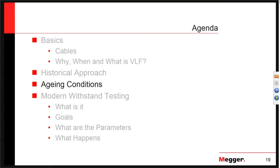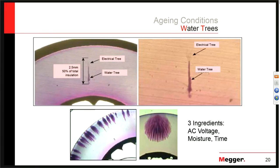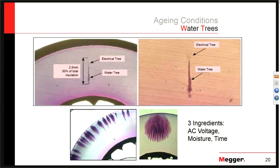What are the aging conditions we keep talking about? Primarily, we're talking about water trees. Almost every cable will develop them — some are more susceptible than others. We classify them into two groups: small distributed water trees, which are an issue but not necessarily critical; and one very large tree, which is the one we're really concerned about — the kind that can cause problems in the very short future.